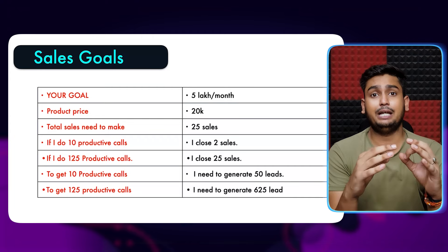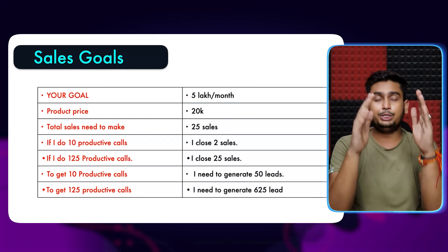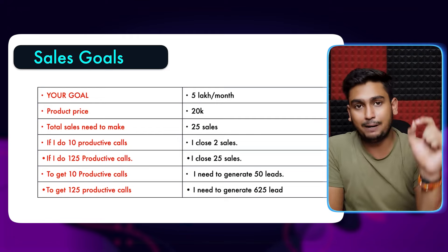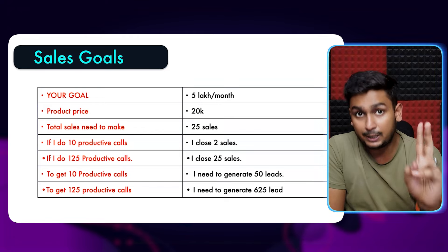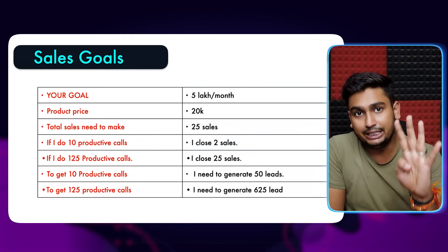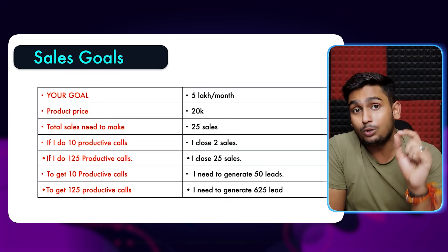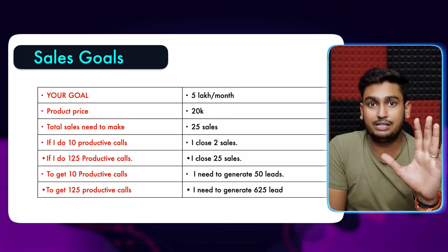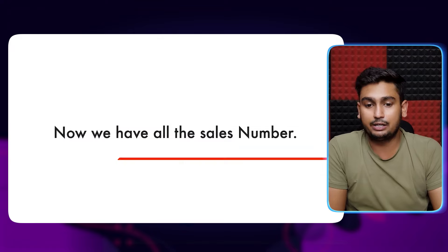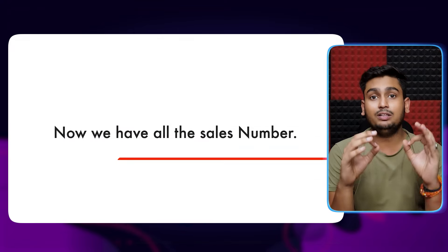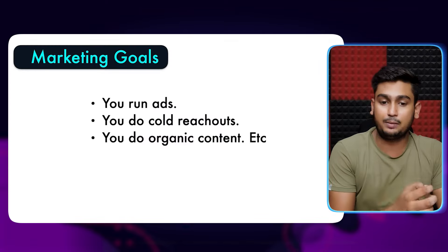So the calculation is: my monthly goal is $50,000. My product price requires 25 total sales. I need 625 leads, and I need 125 productive calls spread over the days of a month. This is our complete sales target — simple. Now that we have all the sales numbers, it's time to understand our marketing game.